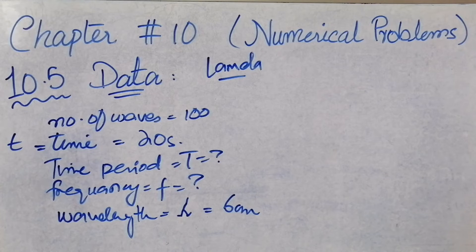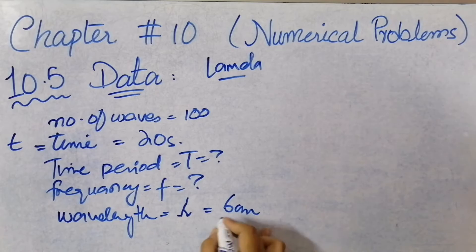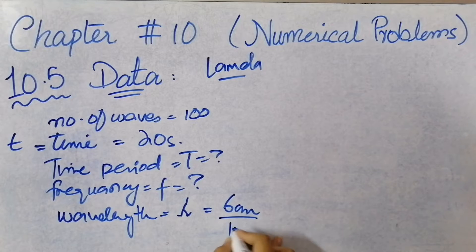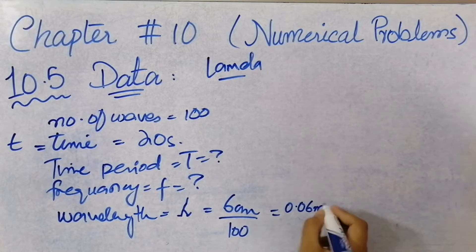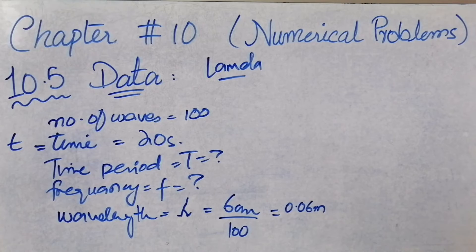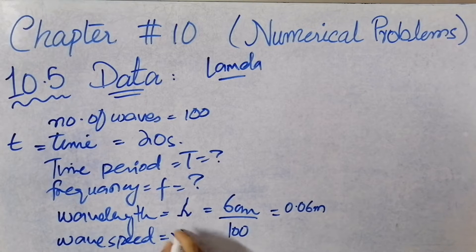The wavelength is 6 cm, but we have to convert it to meters. So we will divide it by 100, and then you will have 0.06 meters. And the last thing we have to calculate is the wave speed, which is denoted by V.